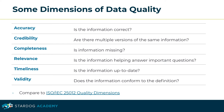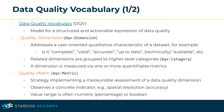The Data Quality Vocabulary (DQV) is a model proposed by the W3C Working Group Data on the Web Best Practices to encode quality information of datasets in a structured and actionable manner. DQV quality dimensions address user-oriented, qualitative characteristics of a dataset — for example, whether it is complete, valid, accurate, or technically available.